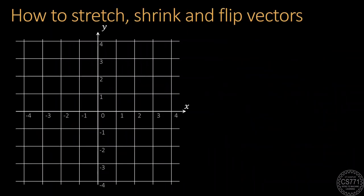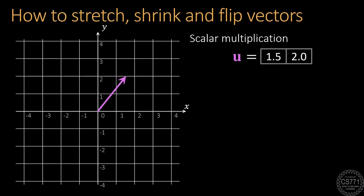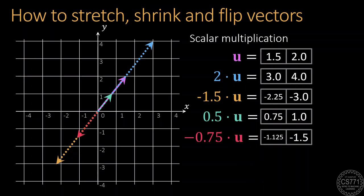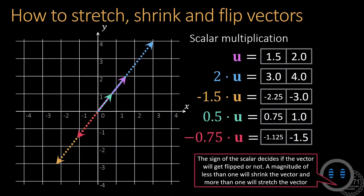There are lots of operations that can be done with a vector. For example, multiplying a vector with a real number, which we call a scalar, can stretch or shrink or flip that vector. To get that scaled vector, we simply multiply the scalar with each coordinate of the vector. Note that a negative sign in the scalar will flip the vector.